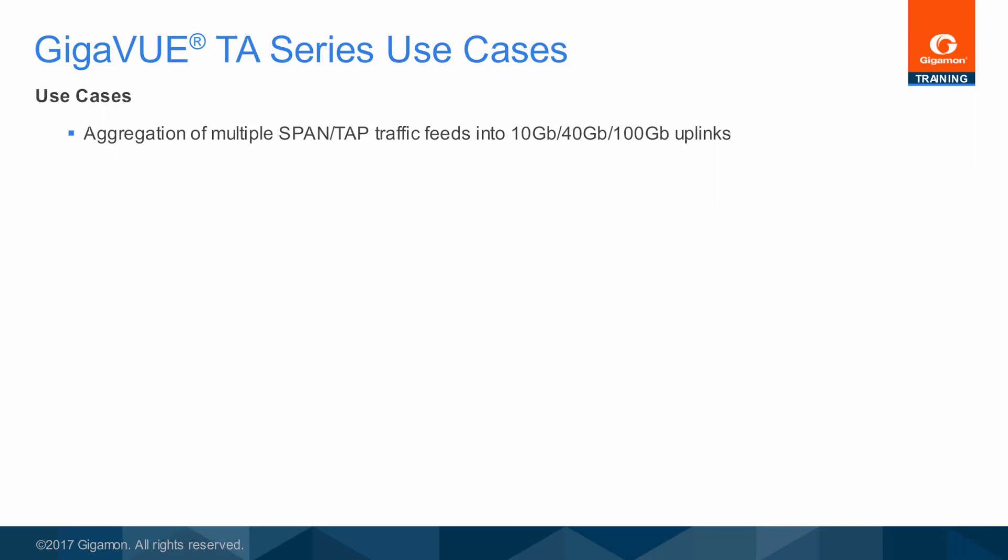Use Gigaview TA series nodes to gather together traffic from multiple low utilization links and send the aggregated traffic stream directly to tools or to a Gigaview H series node for further traffic selection, transformation, and delivery to tools.